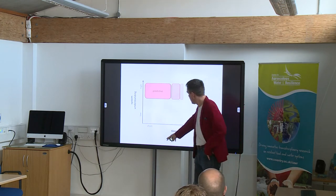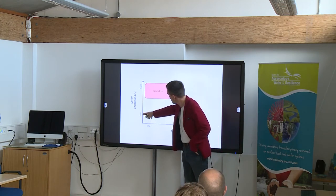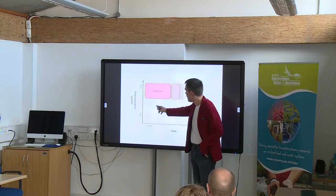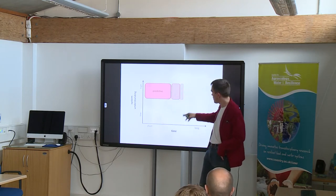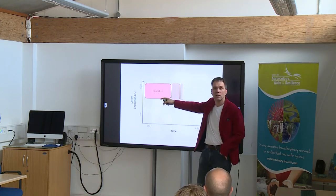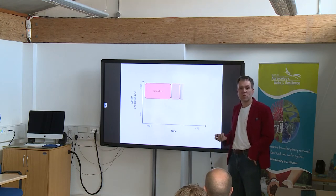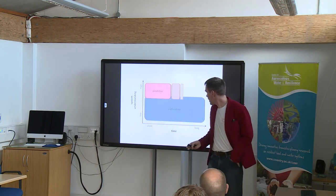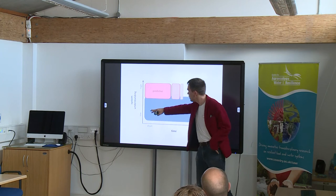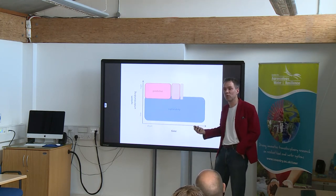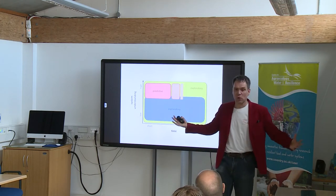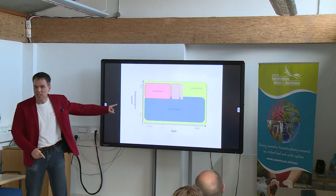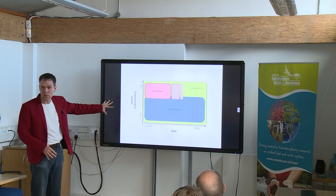Looking at short term versus long term, and systems with low understanding versus high understanding: predictive models are really only useful for systems we have high understanding of, typically for the short term, and they start fading out after that. If you have a system with only low understanding, you cannot even do predictive modelling. Explanatory modelling is typically used over things we do not quite understand — we try to learn about the system by explaining some of the observed behaviours. Exploratory modelling can basically be used as a toy to play around with to learn about the dynamics of the system.